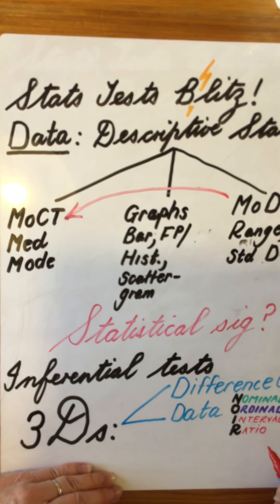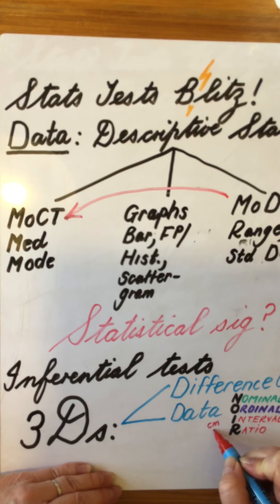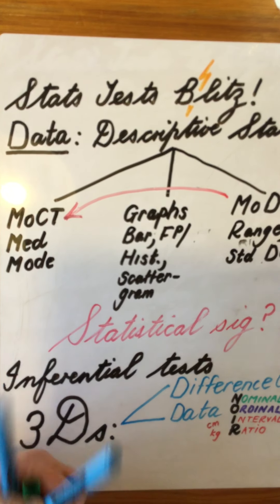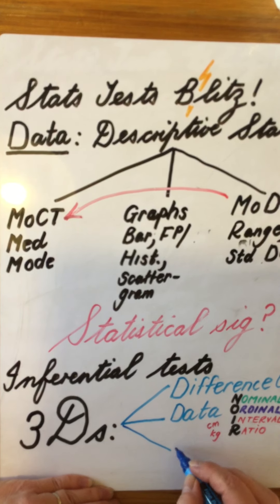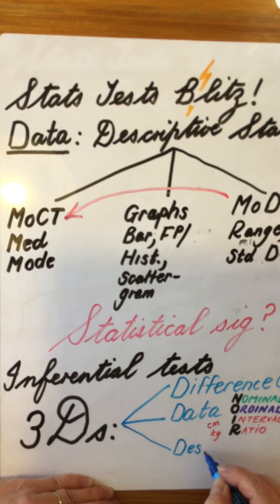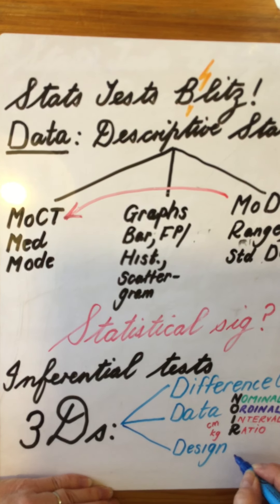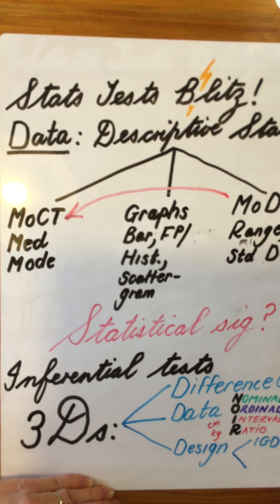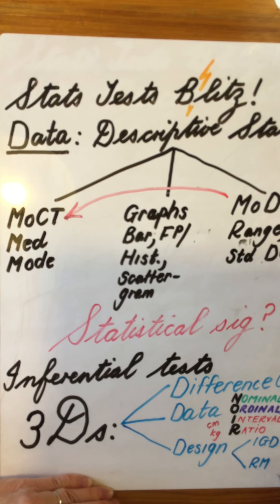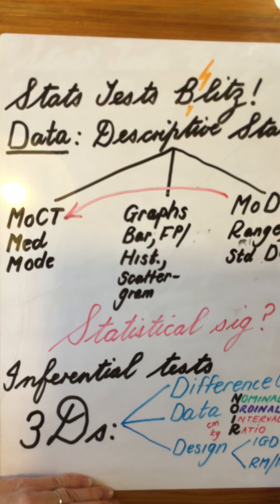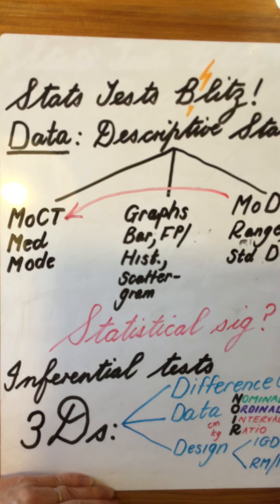Interval ratio data has the safe scale, the public measurement like centimetres, kilograms and so on. The final D refers to what is our design. In terms of designs, we know there are basically two. We can have independent groups design — so no one does the same condition, you're only in one condition. Or we can have repeated measures where you are in both conditions, or matched pairs.